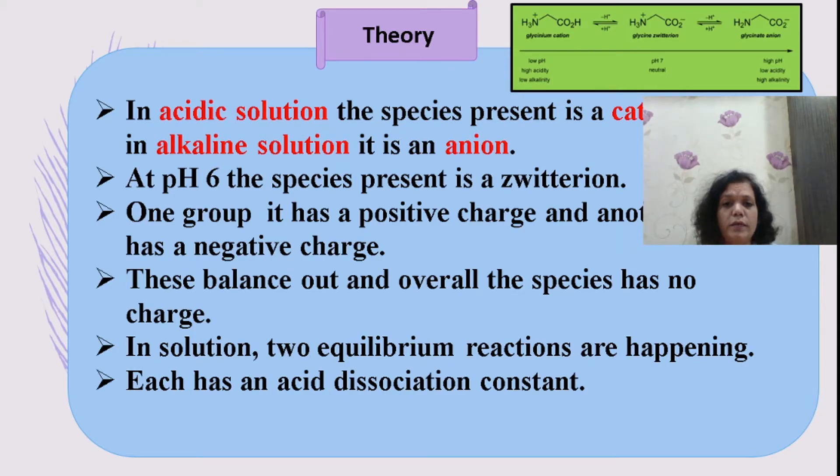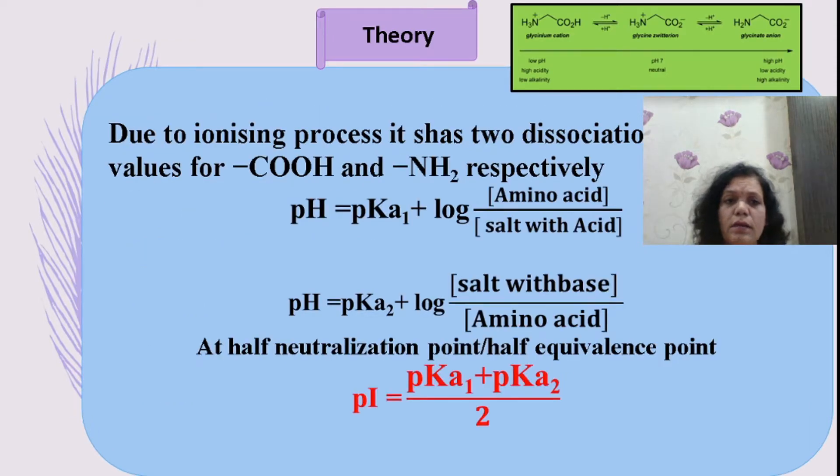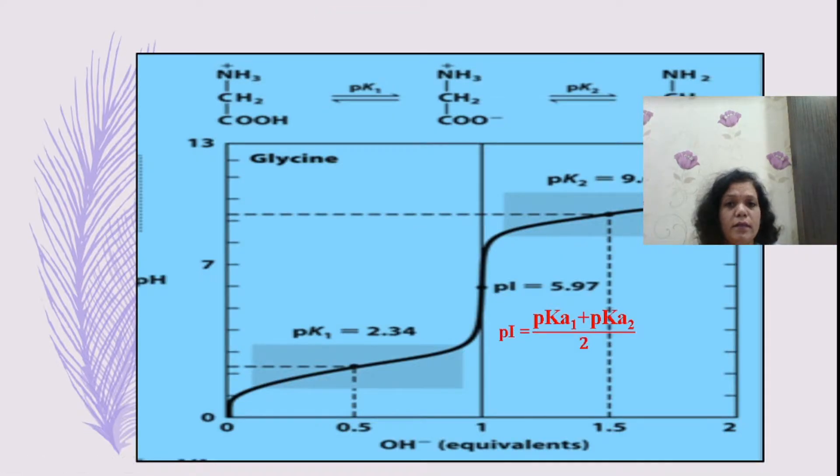This particular zwitterionic structure of the given amino acid forms at pH 6. The equilibrium reactions that happen during this process give the isoelectric point. To find out the dissociation constants of acidic and basic forms, we carry out titration at the half-neutralization point. We need to find pK1 and pK2 values, where the amino acid reacts to form salt and acid, and base and salt respectively.